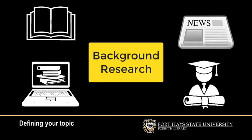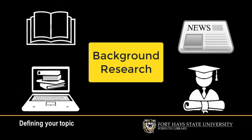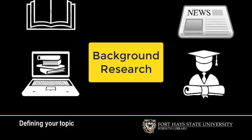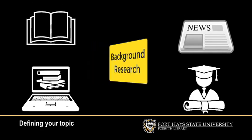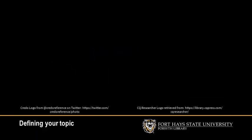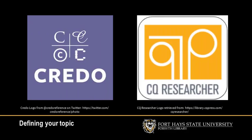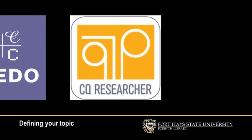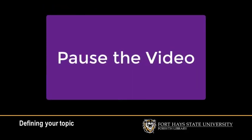The next step is to do some background research. Once you have a general idea of something that interests you, use your textbook or articles you read for class. Use library resources like Credo or CQ Researcher from our reference databases to get a summary of the general topic. Pause the video and give yourself time to write down some possible ideas and look for background research.